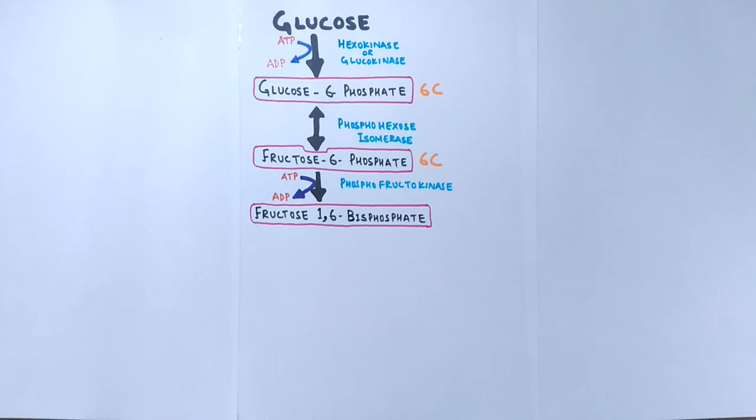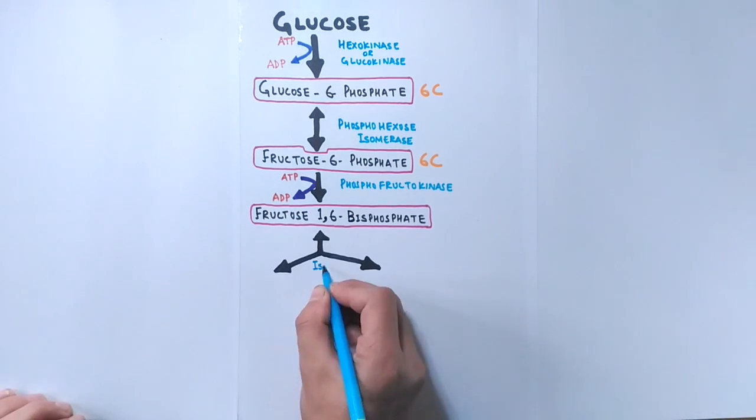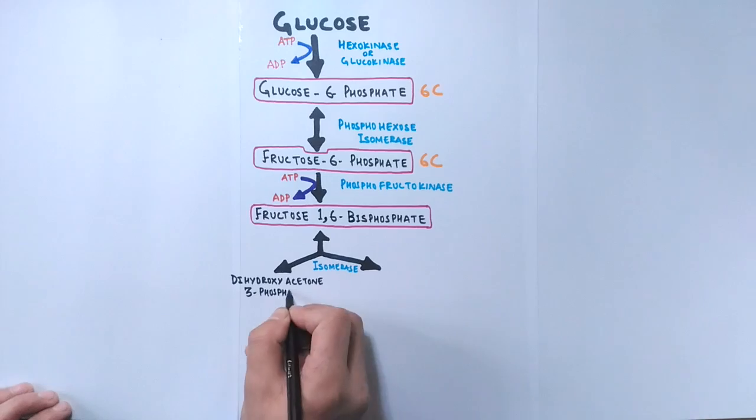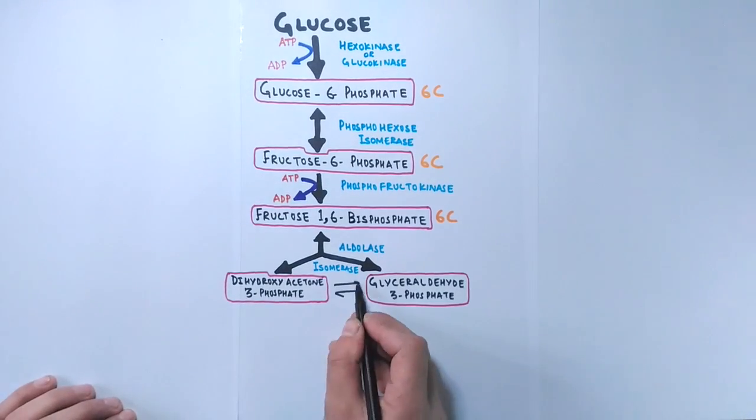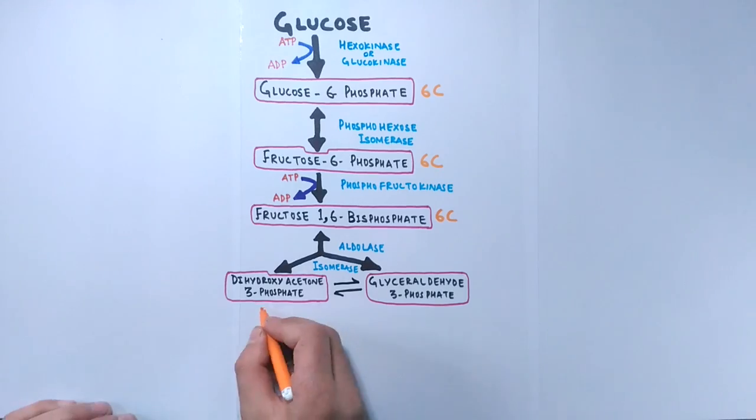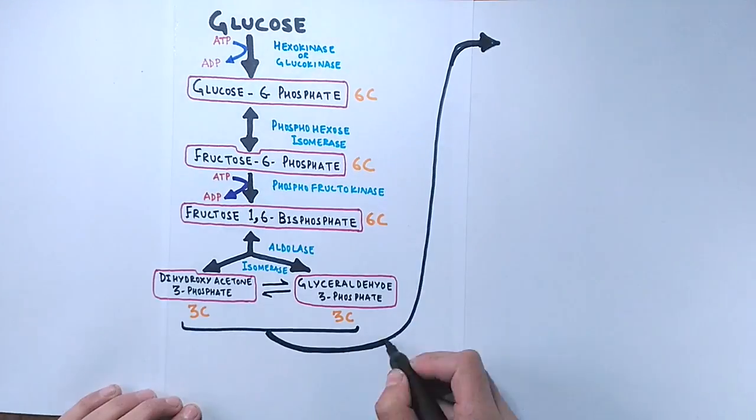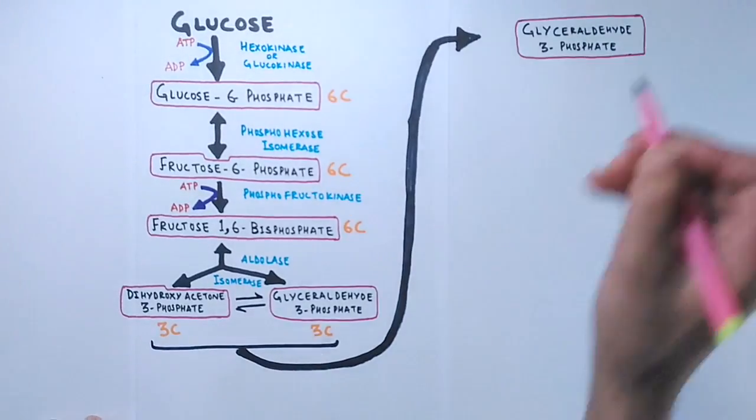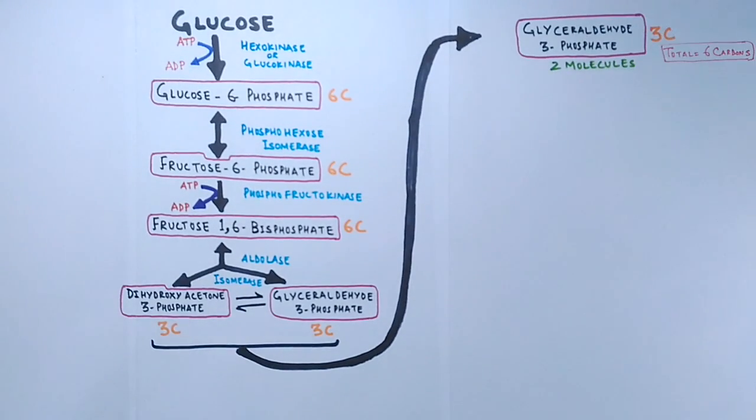After that, fructose 1,6-bisphosphate gets converted into two types of molecules. One is dihydroxyacetone phosphate and the other being glyceraldehyde 3-phosphate with the help of aldolase enzyme. But the dihydroxyacetone phosphate rapidly isomerizes into glyceraldehyde 3-phosphate with the help of isomerase enzyme. So for the next set of reactions we have two molecules of glyceraldehyde 3-phosphate that makes the total number of carbons again six.